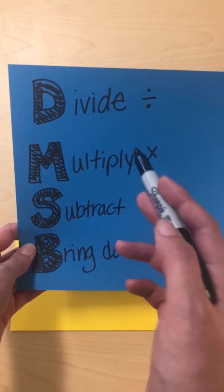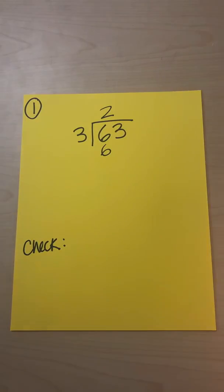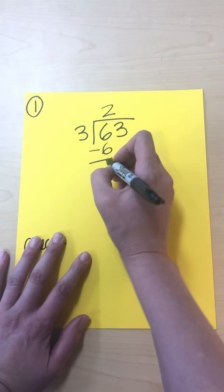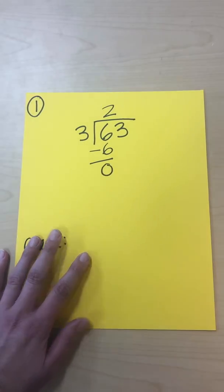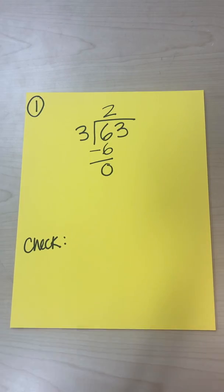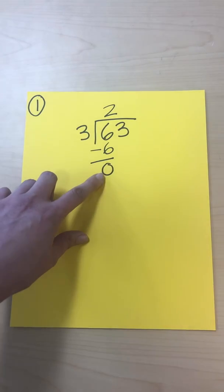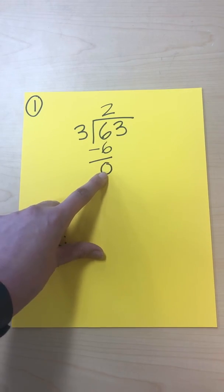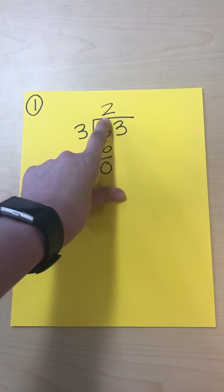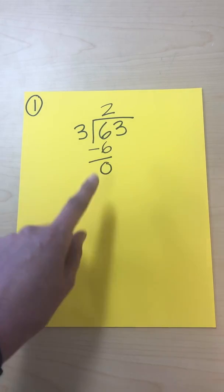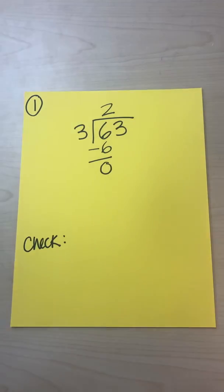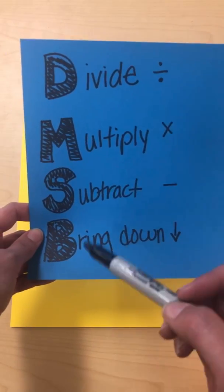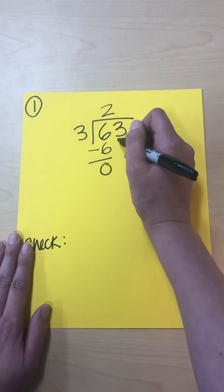Next step after multiply is subtract. We subtract six from six and get zero. This step is also a check: make sure this result is always lower than the divisor. If it ends up higher, you know you should have picked a larger number up top. Since we got zero, we're good. Now for the next step after subtraction, you bring down the next number.